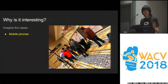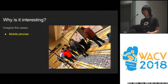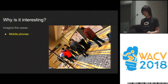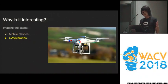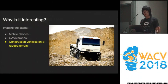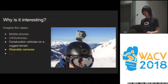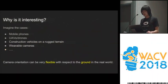So why is it interesting? Why do we need to study arbitrary-orientation pedestrian detection? In the real world, there are lots of cases where the pedestrians are not upright. There is a big chance to have an angled picture when we are using our mobile phones. Similar issues happen with cameras on drones, or when driving construction vehicles on rugged roads, and of course wearable cameras such as GoPro. In all of these real-world cases, the camera orientation can be very flexible relative to the ground.